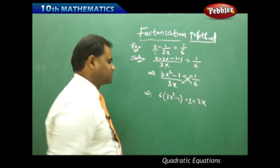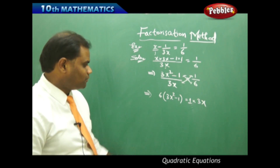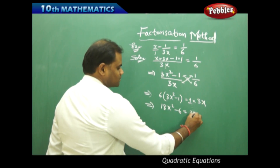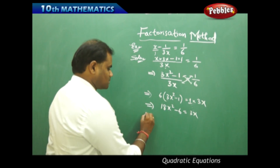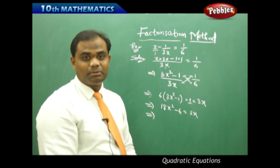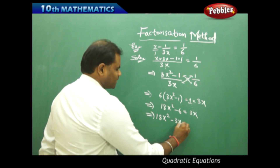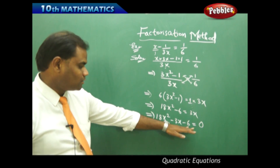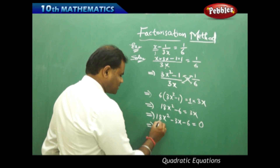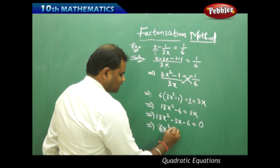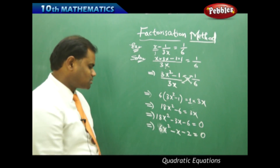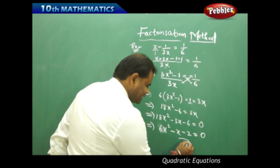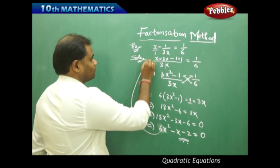On further simplification through cross multiplication, 6 times of 3x squared minus 1 equals 1 times 3x. Expanding the brackets: 6 times 3 is 18x squared minus 6 equals 3x. Moving all terms to the left gives 18x squared minus 3x minus 6 equals 0. Dividing the whole equation by 3 gives 6x squared minus x minus 2 equals 0.